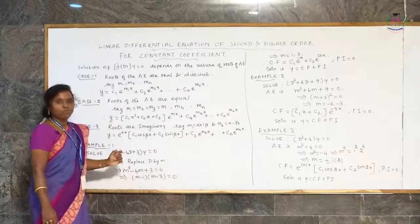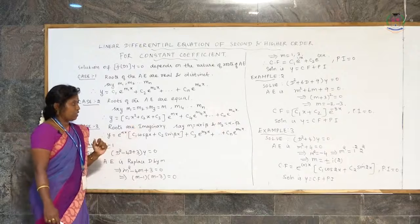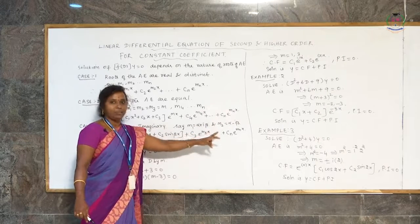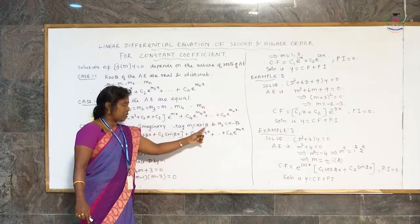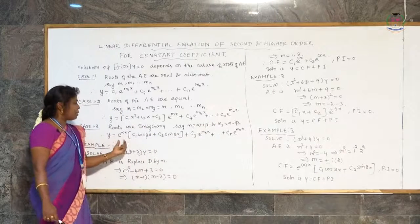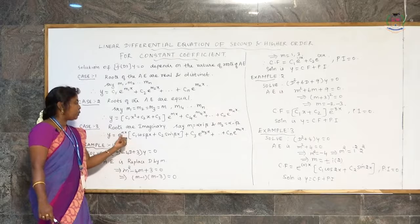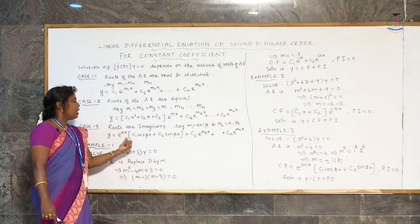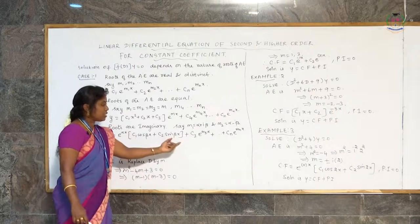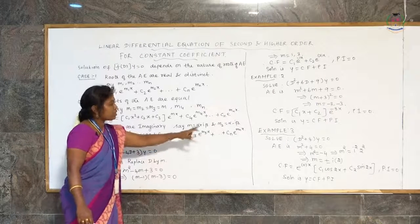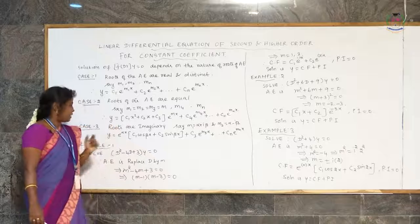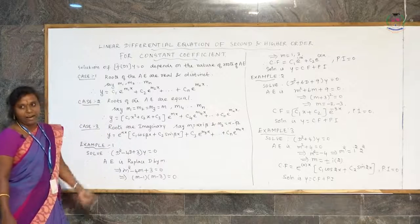Case 3: the roots are imaginary, of the form alpha plus or minus i·beta. Say m₁ equals alpha plus i·beta and m₂ equals alpha minus i·beta. Then the complementary function is written as e^(αx)(c₁cos βx plus c₂sin βx), plus remaining real and distinct roots written as in Case 1.